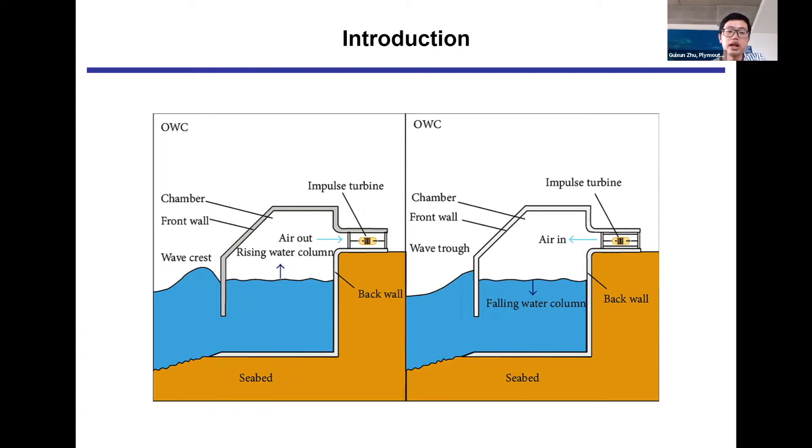The motion of the water column in turn drives the air trapped in the chamber to pass through an air turbine. Finally, electricity is produced by a generator connected with the turbine. For OWC devices, water and air are strongly coupled inside the chamber, affecting the hydrodynamic performance.